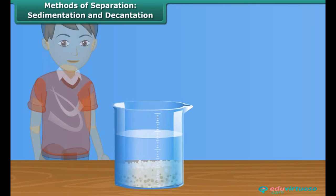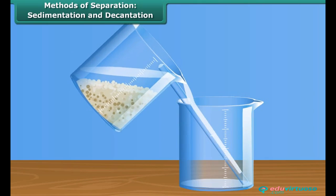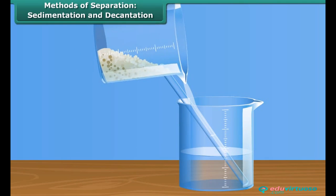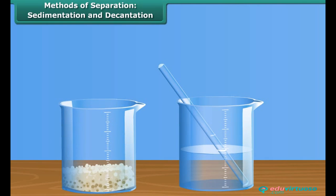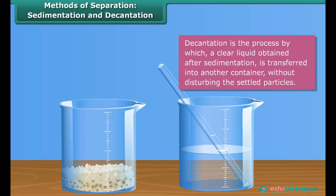Jack separated the upper layer of water from the mixture by gently pouring the clear water into another beaker without disturbing the sediment. This process of separation of liquid from the sediment is called decantation. Similarly, there are other separation methods too. Let us discover them in this module.